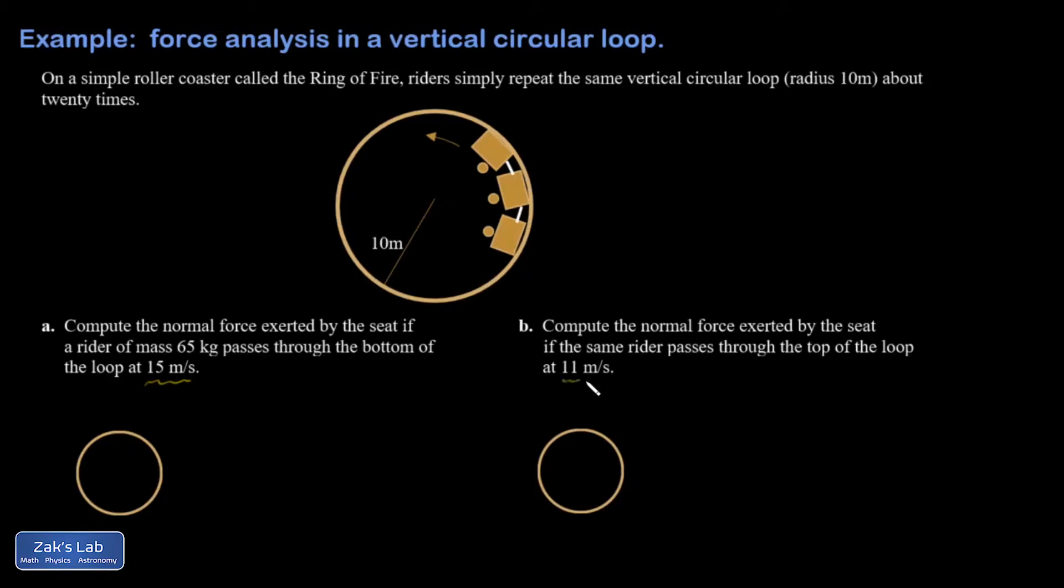In fact, the speed is changing here, but in that moment in time that we're analyzing at the bottom of the loop, when the riders on this roller coaster are going 15 meters per second, you can still analyze it as circular motion. The trajectory is still circular, and for that moment, the acceleration will be given by v squared over r for this v, there's no problem with that.